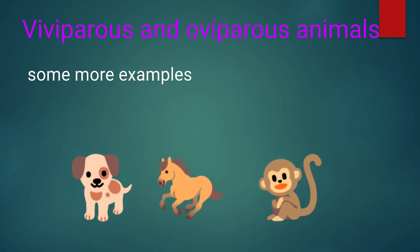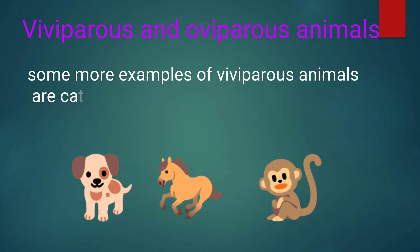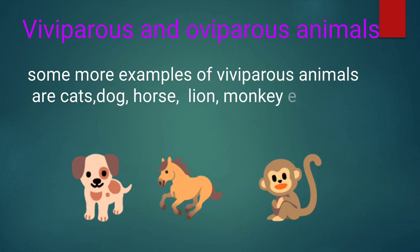Some more examples of viviparous animals are dog, horse, cat, lion, and monkey. These all are viviparous animals.